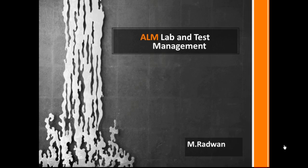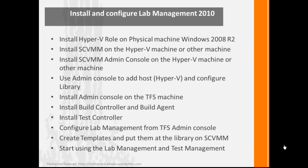This session objective is to summarize the steps you will use throughout your lifecycle with Lab and Test Management. First, I will describe how to install Lab Management 2010. We start by installing the Hyper-V role on a physical machine running Windows 2008 R2 — Hyper-V is just a role you enable. After enabling the role you restart your machine. The second step is to install System Center Virtual Machine Manager on the Hyper-V machine or another machine.